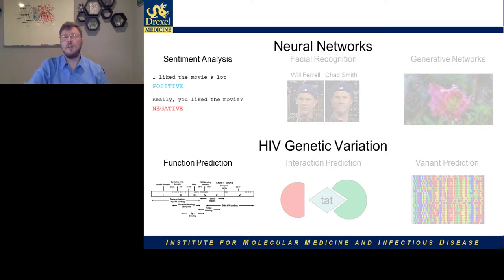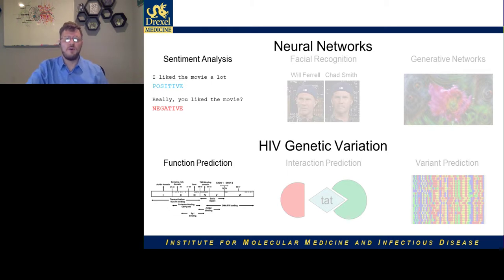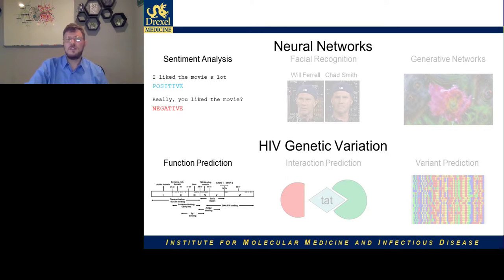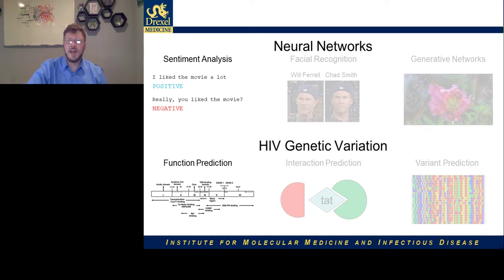I want to talk about how techniques for sentiment analysis — which are used to tell whether you liked a movie from a tweet — can be used for predicting gene functions. I want to talk about how techniques that can distinguish between two faces can be repurposed to find the human proteins that interact with viral proteins. And I want to talk about how generative adversarial networks — networks trained to devise new things — can be used to explore different variants.